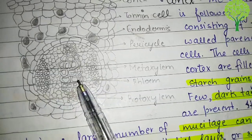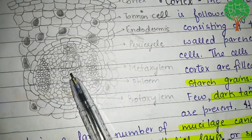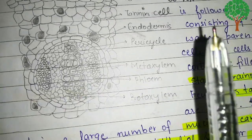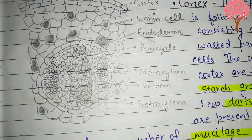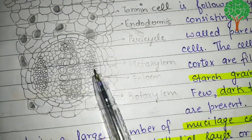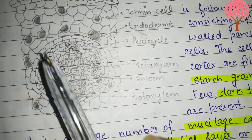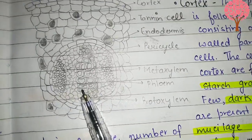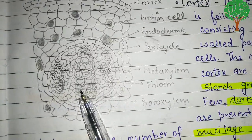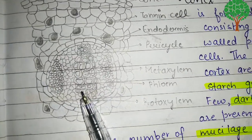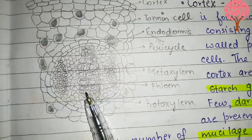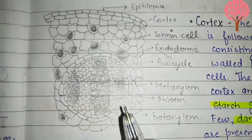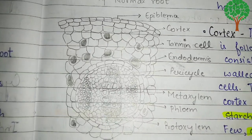Roots show exarch condition, meaning meta-xylem is towards the pith and proto-xylem is towards the periphery. Meta-xylem has large cells and proto-xylem has small cells. Phloem is present along with parenchymatous tissues. In gymnosperms, vessels are absent in xylem, and phloem only has sieve tubes and parenchyma present because companion cells are absent. This is about the vascular bundle, pericycle, endodermis, and the normal anatomy of the young root.